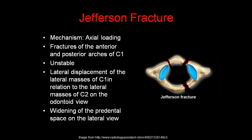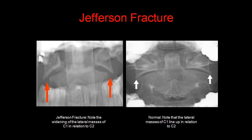A Jefferson fracture occurs because of axial loading. These are fractures of the anterior and posterior arches of C1, and are considered unstable. There is lateral displacement of the lateral masses of C1 in relation to the lateral masses of C2 on the odontoid view, and widening of the pre-dental space on the lateral view. Note that there is widening of the lateral masses of C1 in relation to C2 on the odontoid view, compared to a normal relationship on the right.